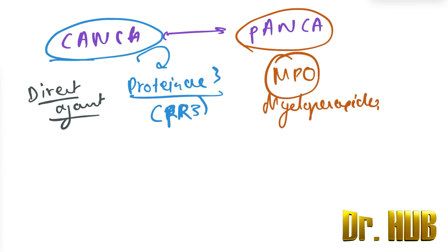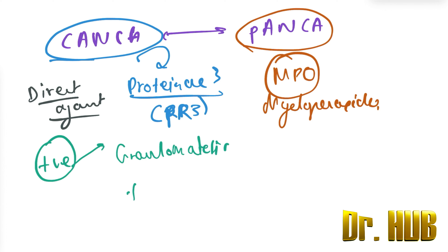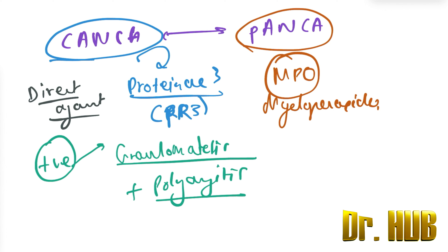Looking at conditions where C-ANCA is predominantly positive: it is positive in granulomatosis with polyangiitis, also known as Wegener's granulomatosis.